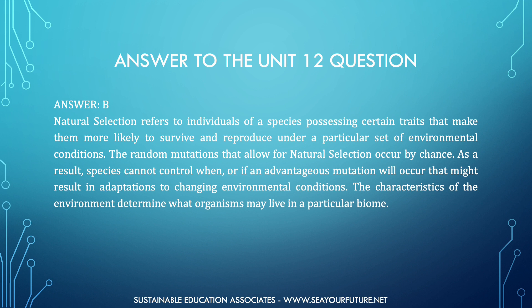The random mutations that allow for natural selection occur by chance. As a result, species cannot control when or if an advantageous mutation will occur that might result in adaptations to changing environmental conditions. The characteristics of the environment determine what organisms may live in a particular biome.